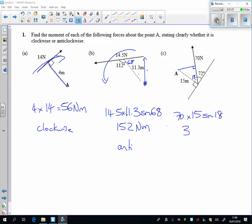So that gives me 324 newton metres, and you're going that way there, so that again is another anti-clockwise one. It's always the distance, the perpendicular distance, times by the force.